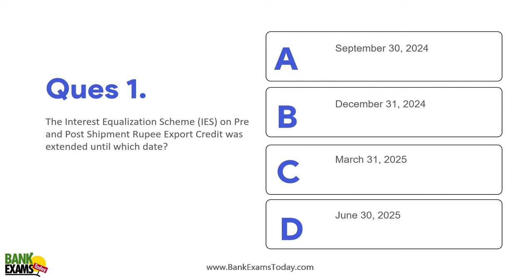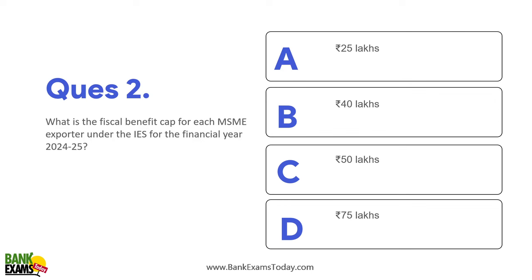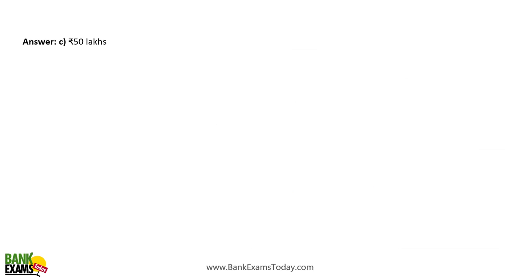The Interest Equalization Scheme — there is a circular on the Interest Equalization Scheme. It has been extended for another three months. The last date till when exporters can take benefit under the Interest Equalization Scheme is 31st December 2024. What is the fiscal benefit cap for each MSME exporter under the Interest Equalization Scheme for financial year 2024-25? It is 50 lakh rupees.